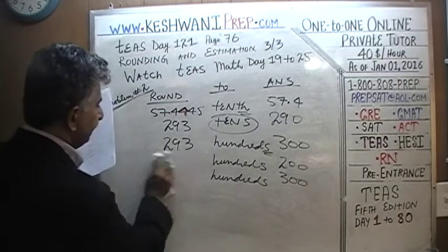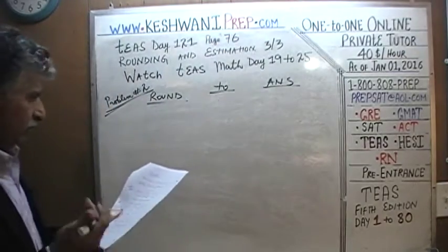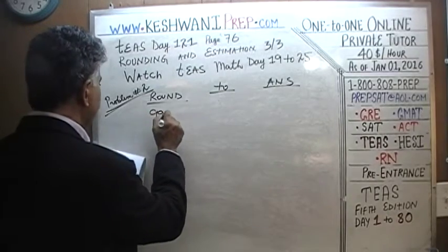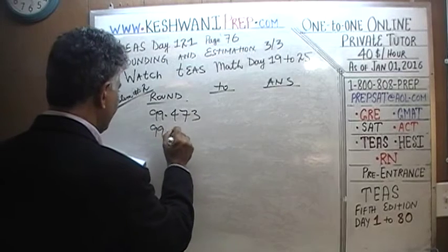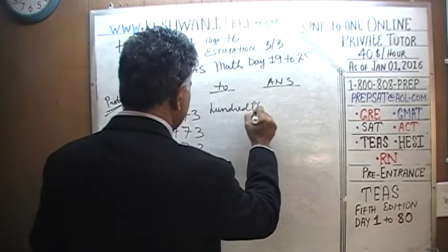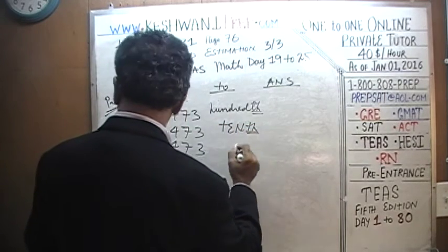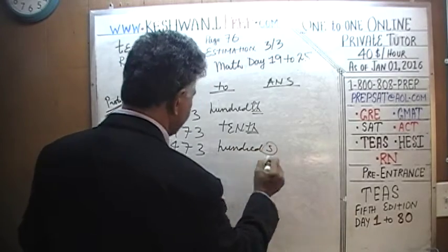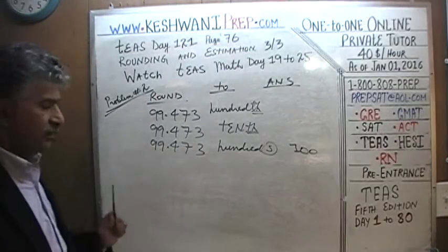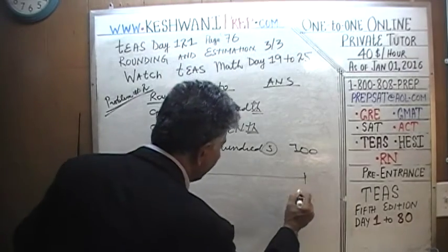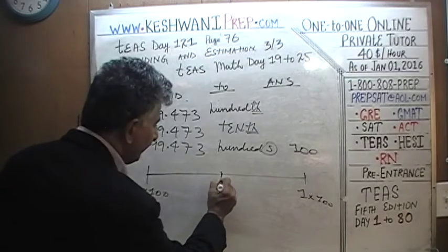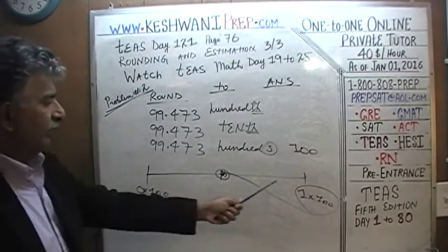We are going to do 3 more and that's it. Also, I am running out of ink on this marker — I forgot to change it. 99.473 — rounded to the nearest hundreds, nearest tenths, and nearest hundredths. For the nearest hundred: 99 is closer to 100. Had it been 50 or more, we would round to 100. 99 is very close to 100, so it rounds to 100.